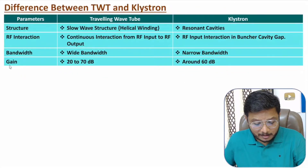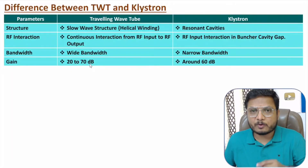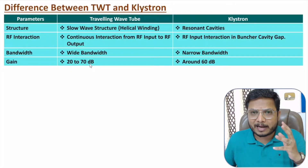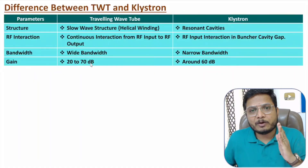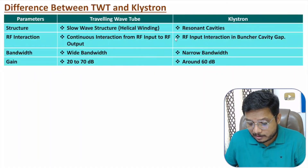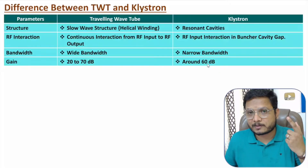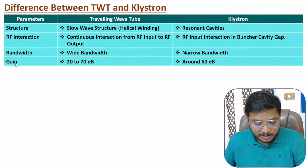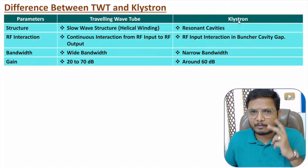In terms of gain, the traveling wave tube offers 20 to 70 dB — usually around 60 dB in the market. The klystron gain is around 60 dB or even higher. So if comparing gain, the klystron can be said to have better gain.